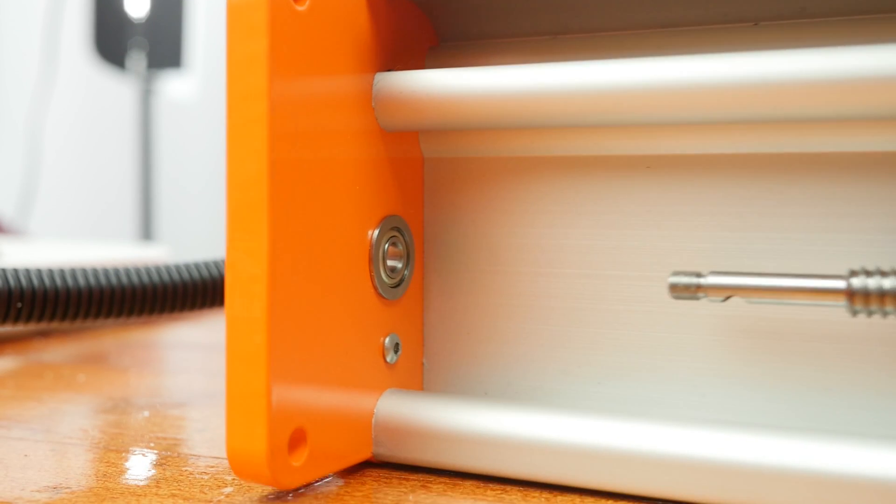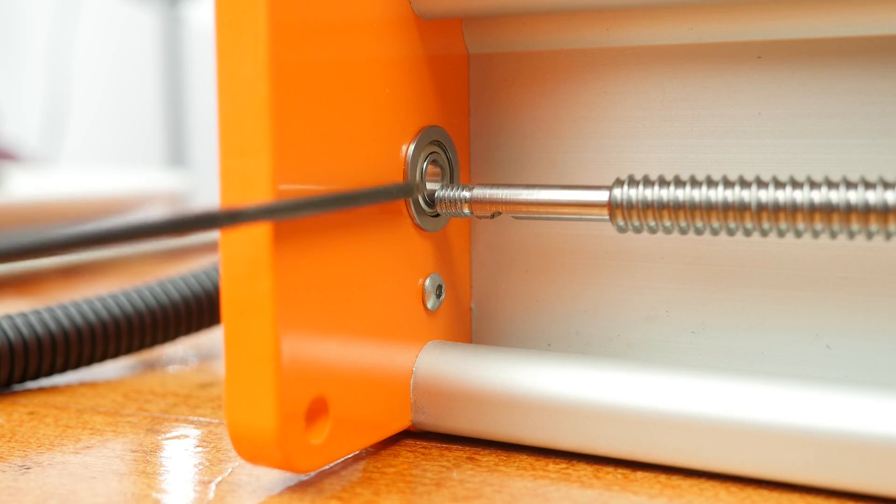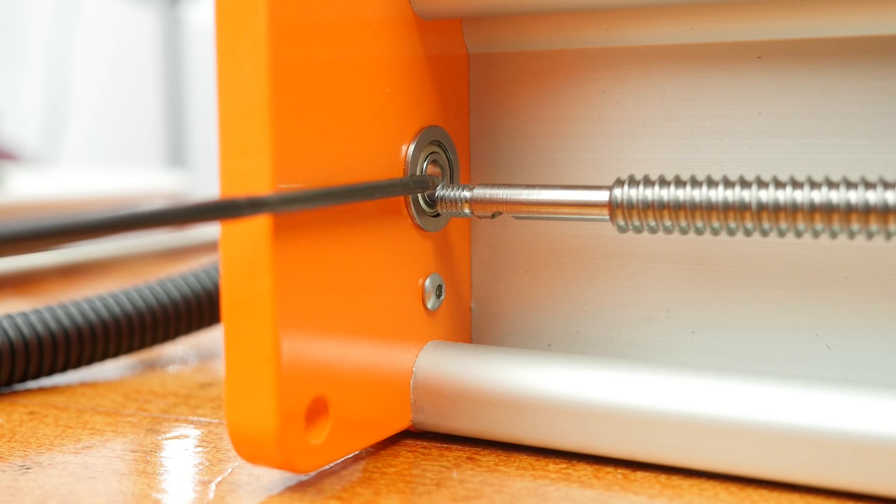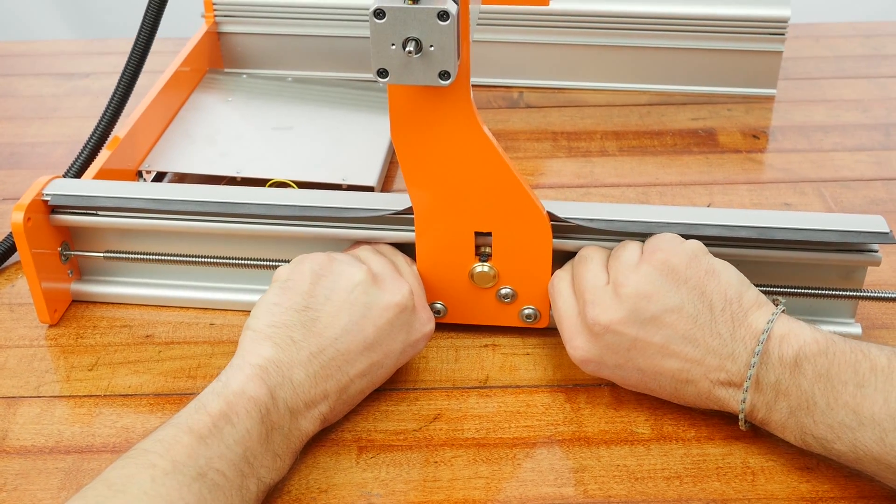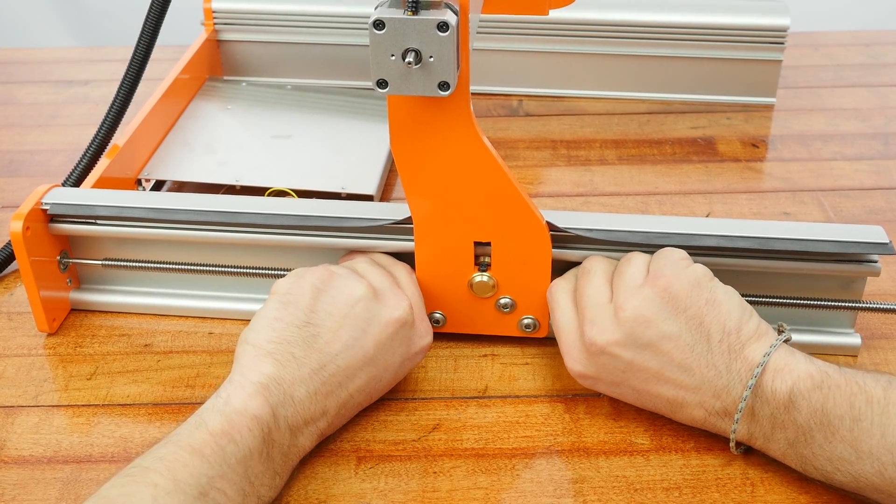Push the entire assembly toward the rear bearing. Notice how this lead screw is not centered in the bearing's hole. We'll need to apply a little bit of force to rotate the lead screw upward slightly.